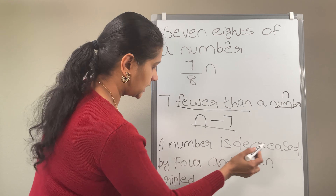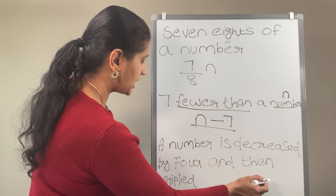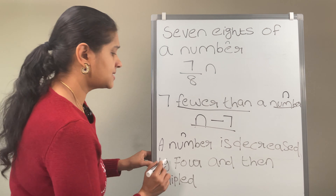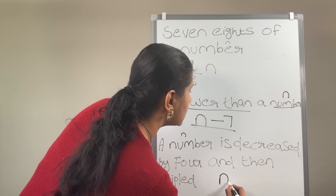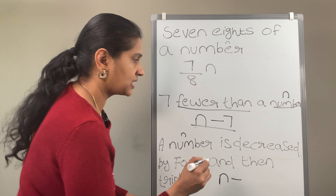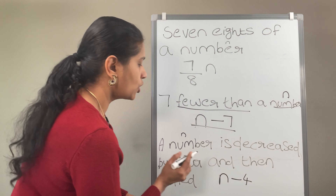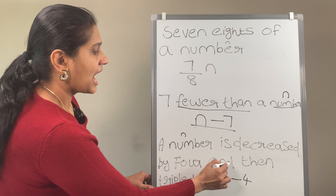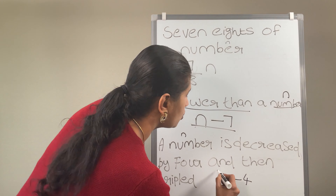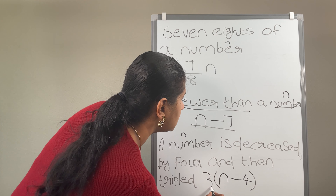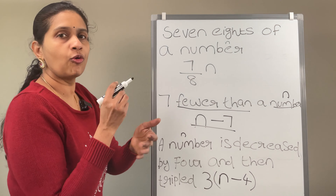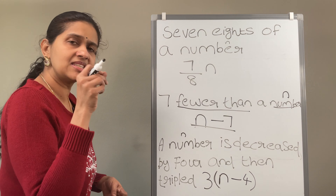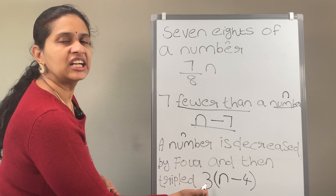A number is decreased by 4 and then tripled. A number — say n. A number is decreased by 4 means n minus 4. And then tripled — tripled means you have to multiply it 3 times. So 3 times (n minus 4). In such an operation, first you have to perform the operation inside the parenthesis, that is n minus 4, then multiply it times 3.